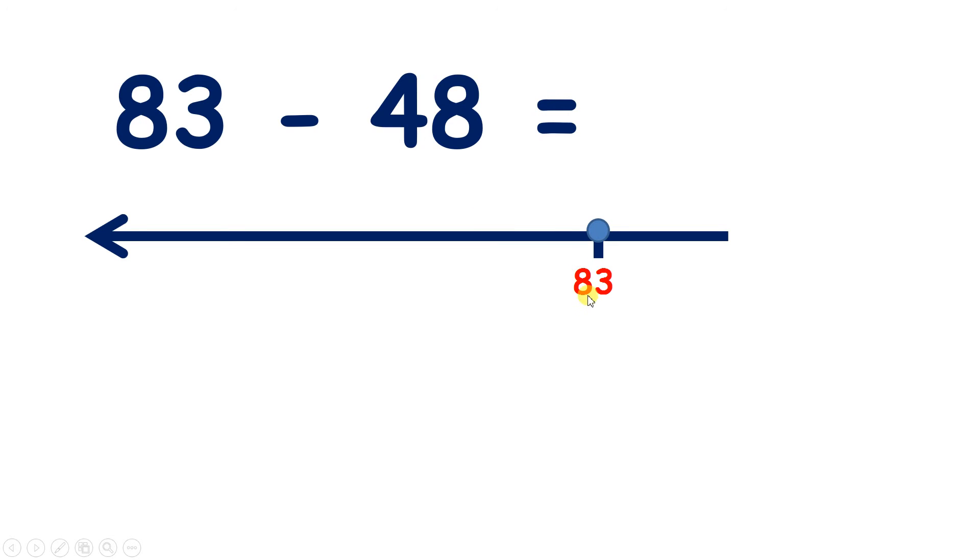So 83 minus 50 is 33, so 8 tens minus 5 tens is 3 tens, and we still have our 3 units. And now we add 2, which gives us 35.